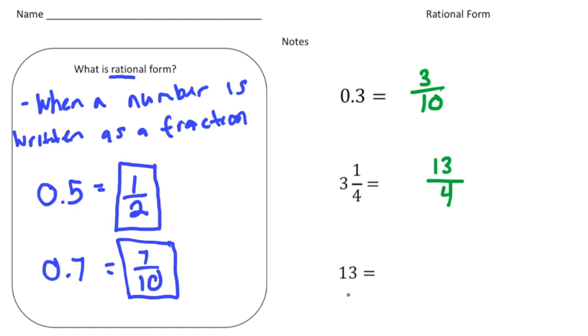And then finally, we have the integer 13. Well, to make this in rational form, we need to write it as 13 over 1. So anytime you hear the term rational form, it basically means take your number and write it as a fraction.